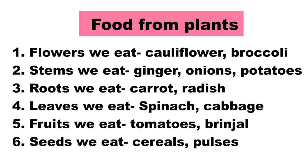Food from plants: flowers we eat are cauliflower and broccoli; stems we eat are ginger, onions and potatoes; roots we eat are carrot, radish and beetroot; leaves we eat are spinach and cabbage; fruits we eat are tomatoes and brinjal; seeds we eat are cereals and pulses.